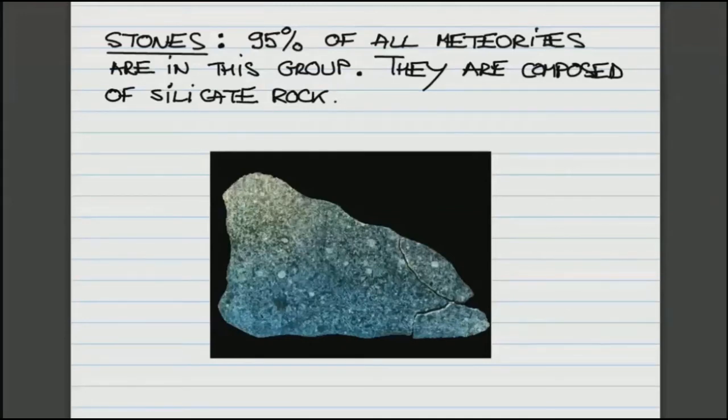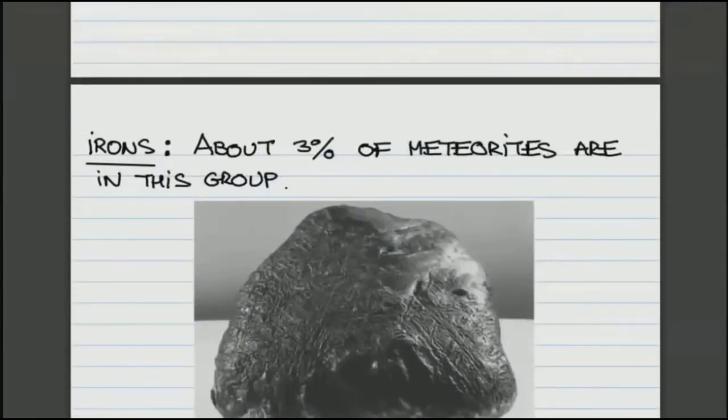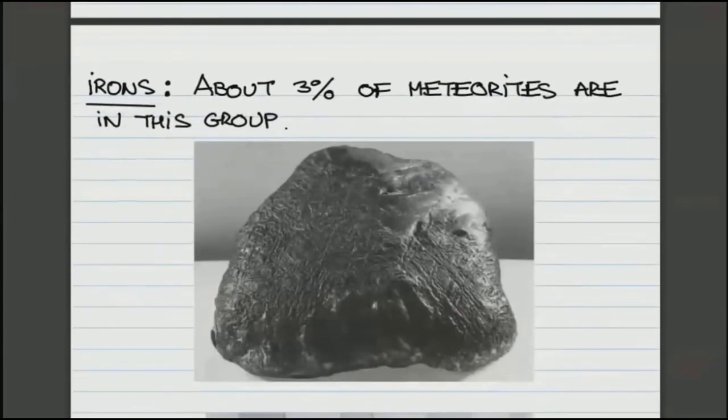The second group, but it's much smaller, are so-called irons. About 3 percent of all meteorites are irons. They are made out of nickel and iron, hence the name.